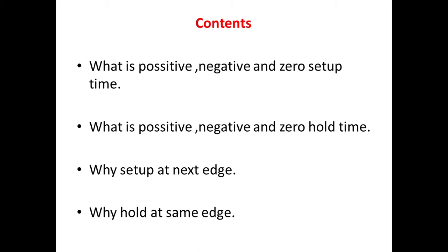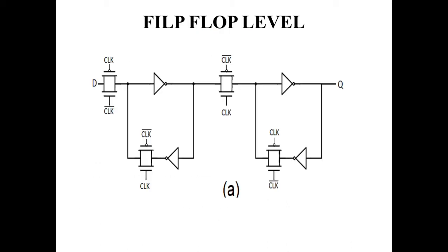Why do we check setup at the next edge only, and why do we check hold at the same edge only? This is the basic circuit we discussed in the previous video, where we defined setup time through inverter delays and transmission gate delay, and similarly the hold time through transmission gate delay and the combinational logic delay of the incoming circuit.